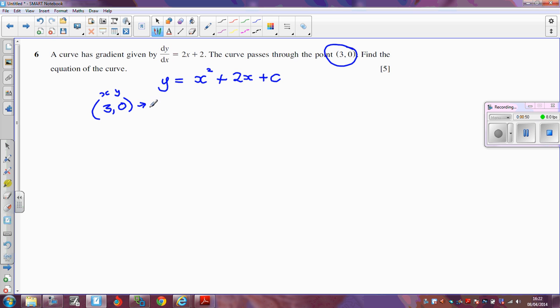This is x and this is y. So instead of y, I'm going to put 0 equals—x squared, well that's 3 squared, which is 9, plus 2 times 3, which is 6, plus c.